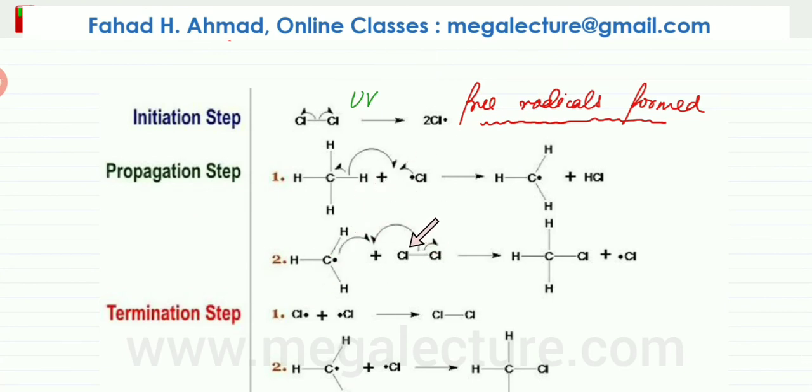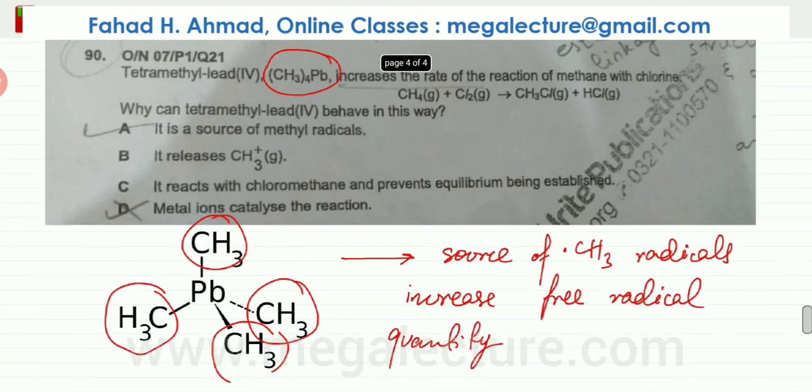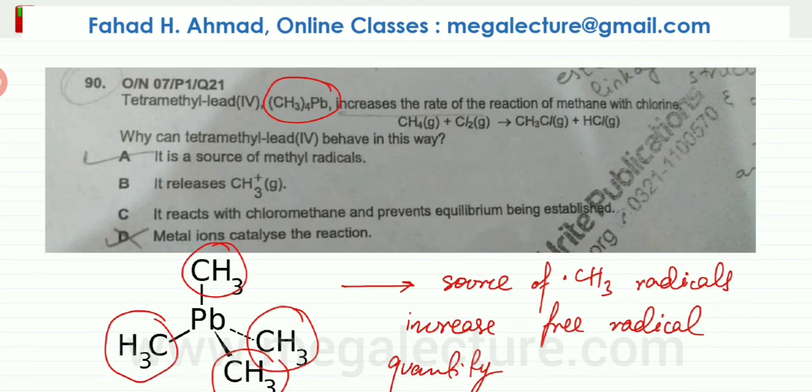So if there are more free radicals, there's going to be a faster reaction, and the whole process is going to speed up. So that is the answer to the question. Option number A would be the most suitable option, that it is a source of methyl radicals which ends up speeding the rate of the reaction.